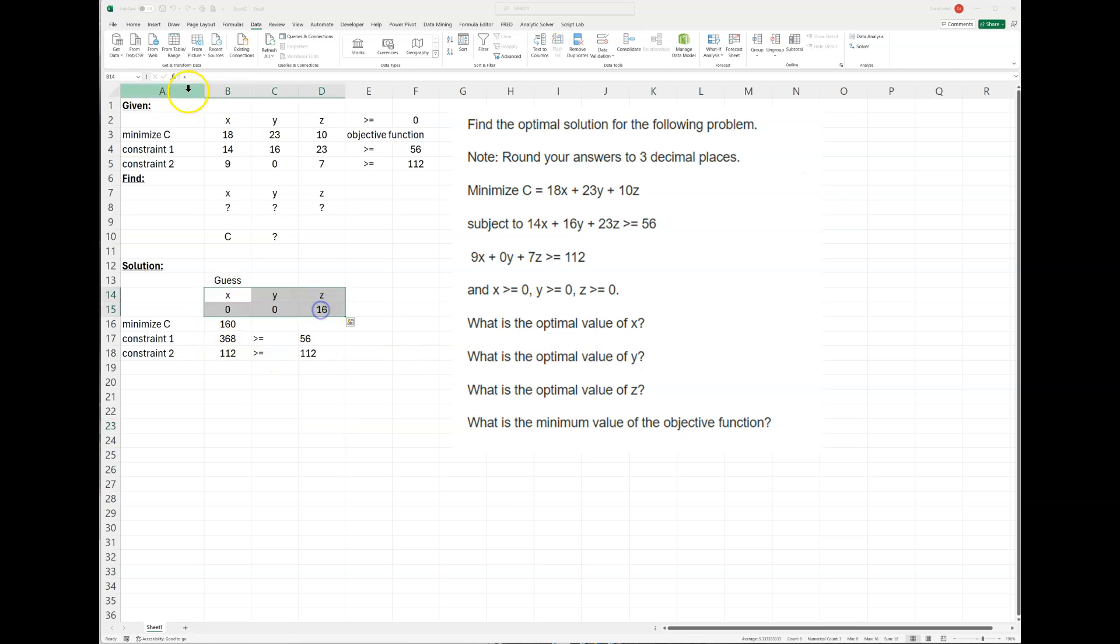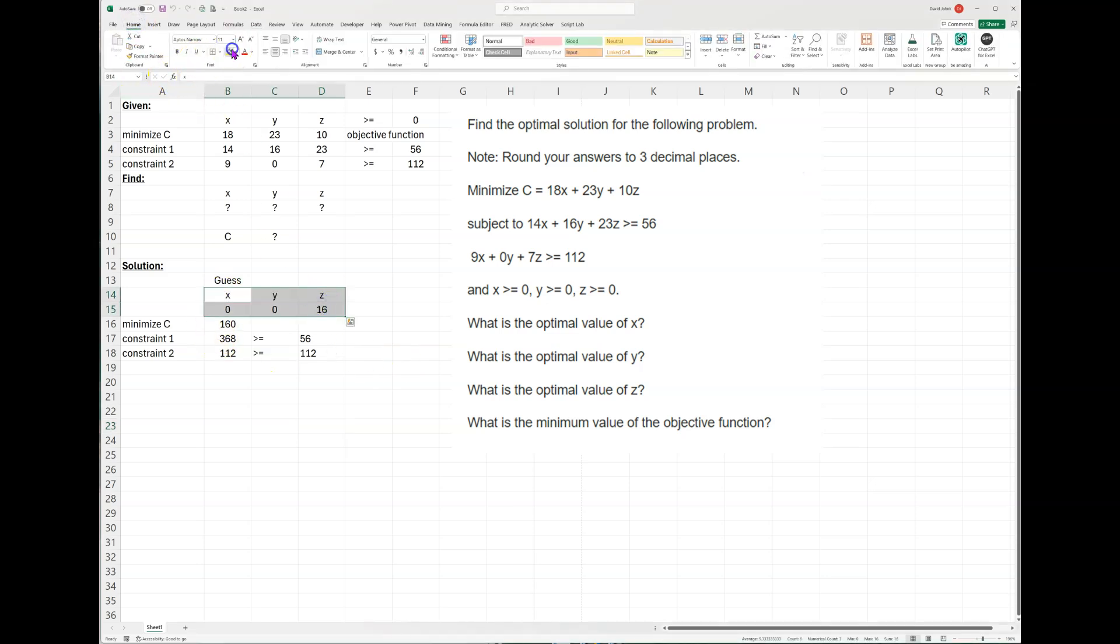I'm going to accept my solution. You can see that this is what I got for the answer. And then this is the answer to the third question. So the minimum value is 160, 0 for Y, X is 0, Y is 0, Z is 16. This one is exactly 112, so that satisfied is equal to. This one's greater than that. And that's it.